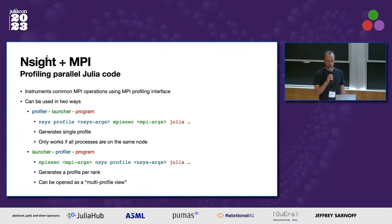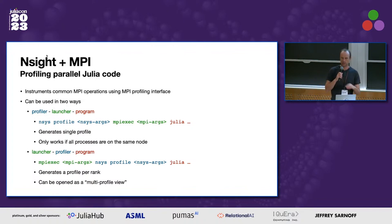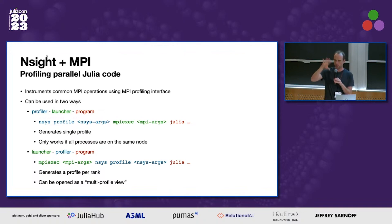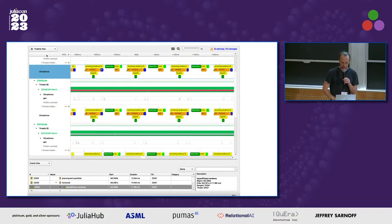My personal motivation was profiling MPI code. There are two ways to do this. The simple one is to have the profiler run the MPI launcher, which runs the program — something like nsys profile mpirun ... — and that gives you a single file with all processes annotated, but only works if everything is on a single node. If you want a fully distributed run, you put the profiler inside the launcher, and you get one profile per process. The viewer has a very nice multi-report view where you can open and view them all individually. Here's a picture from our own code where you can zoom in and out and see all the different processes, and it also annotates the MPI ranks by default.